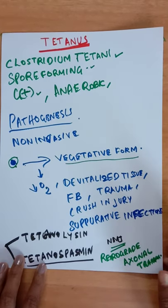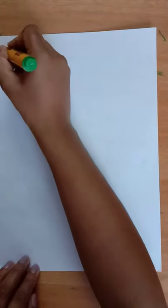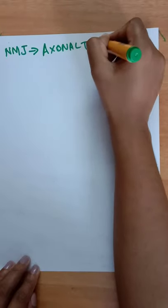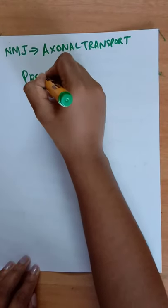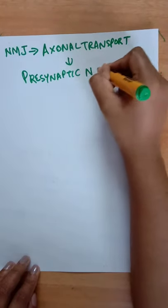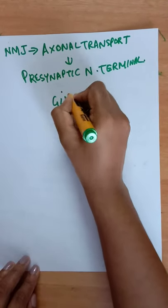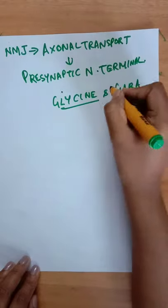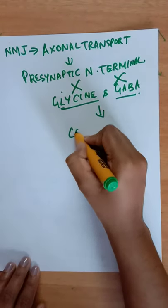The toxin reaches the presynaptic nerve terminal where it prevents the release of inhibitory neurotransmitters glycine and GABA. It inhibits the release of glycine and GABA, and that causes the uncontrolled contraction of muscles.